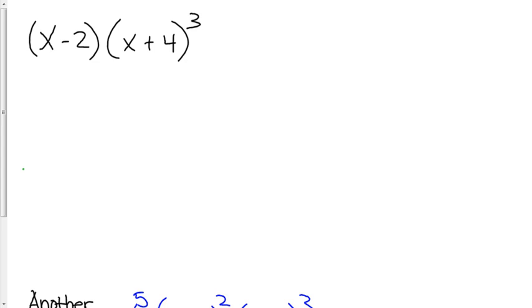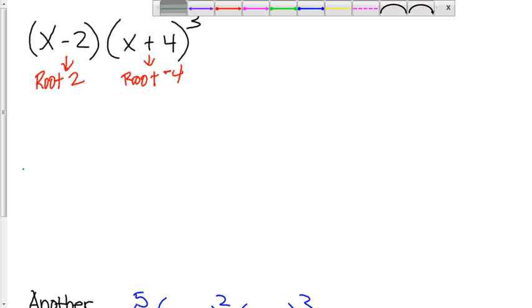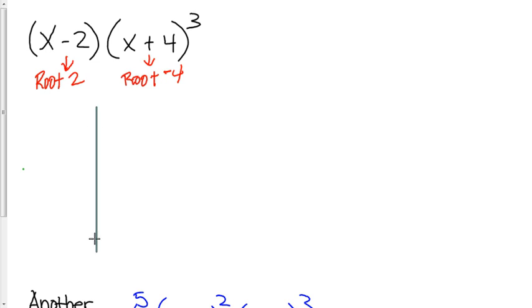Now looking at this example here. From this factored polynomial, we know that there is a root at 2. And here, there's a root at a negative 4. This root occurs three times.